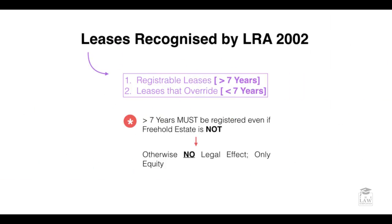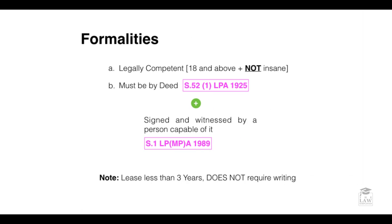There are several types of leases recognized by the Land Registration Act 2002, a seminal act which changed the landscape of UK property law. There are registrable leases, which are those greater than seven years, as well as leases that override the register, which are less than seven years. Leases of seven years or greater must be registered even if the freehold estate is not; otherwise they cannot take legal effect and will only exist in equity.